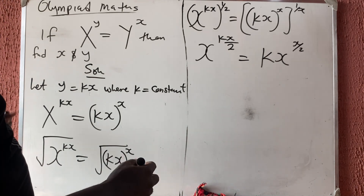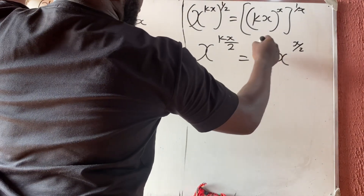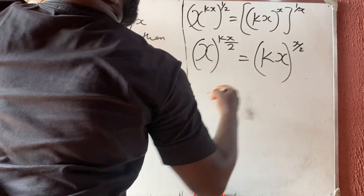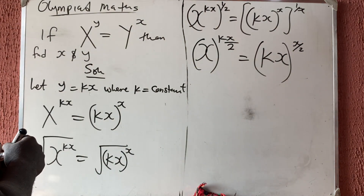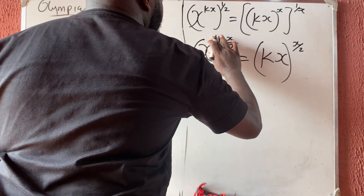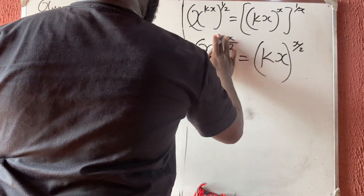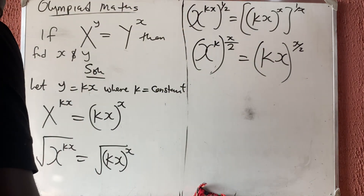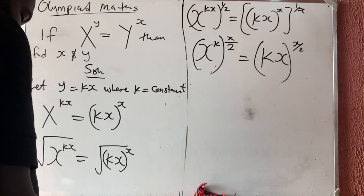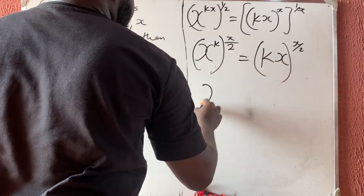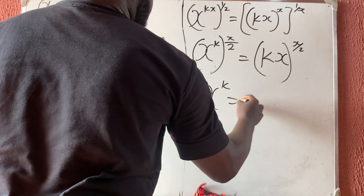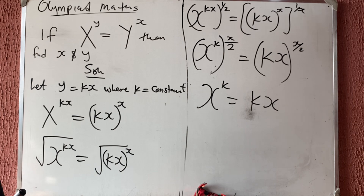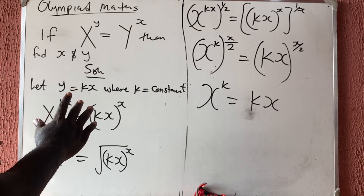By comparison, both sides have the same exponent structure, so by comparison we are going to have that x raised to the power k is equal to kx.